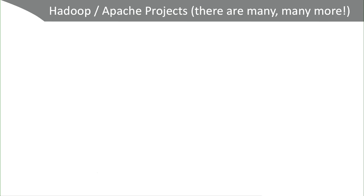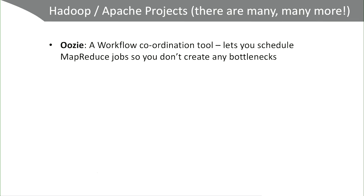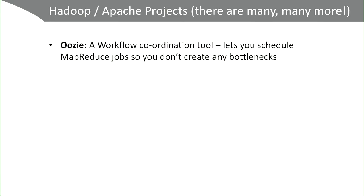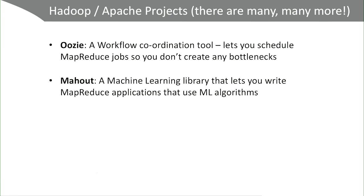HDFS and MapReduce are two of the foundational elements of Hadoop, but there are many open-source projects which add value. One is called Oozie — a workflow coordination tool that lets you schedule MapReduce jobs so you don't create bottlenecks. A batch job is like baking cookies: once that batch goes into the oven, you just have to wait. Oozie allows us to manage MapReduce jobs to avoid those bottlenecks. There's also Mahout — a machine learning library that lets you do regression, classification, and deep neural networks on your data set. Mahout is probably not one of the more popular machine learning frameworks today, as PyTorch and TensorFlow have become much more popular.